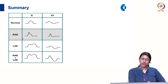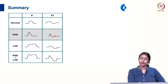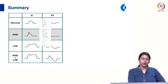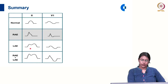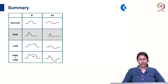To summarize: in right atrial enlargement, the amplitude of the P wave is increased in lead 2 and the positive deflection will be of greater amplitude in V1. In left atrial enlargement, there is a notched P wave with increased duration in lead 2, and a normal positive deflection with a broader and deeper negative deflection in V1. A combination of these findings is seen in biatrial enlargement.